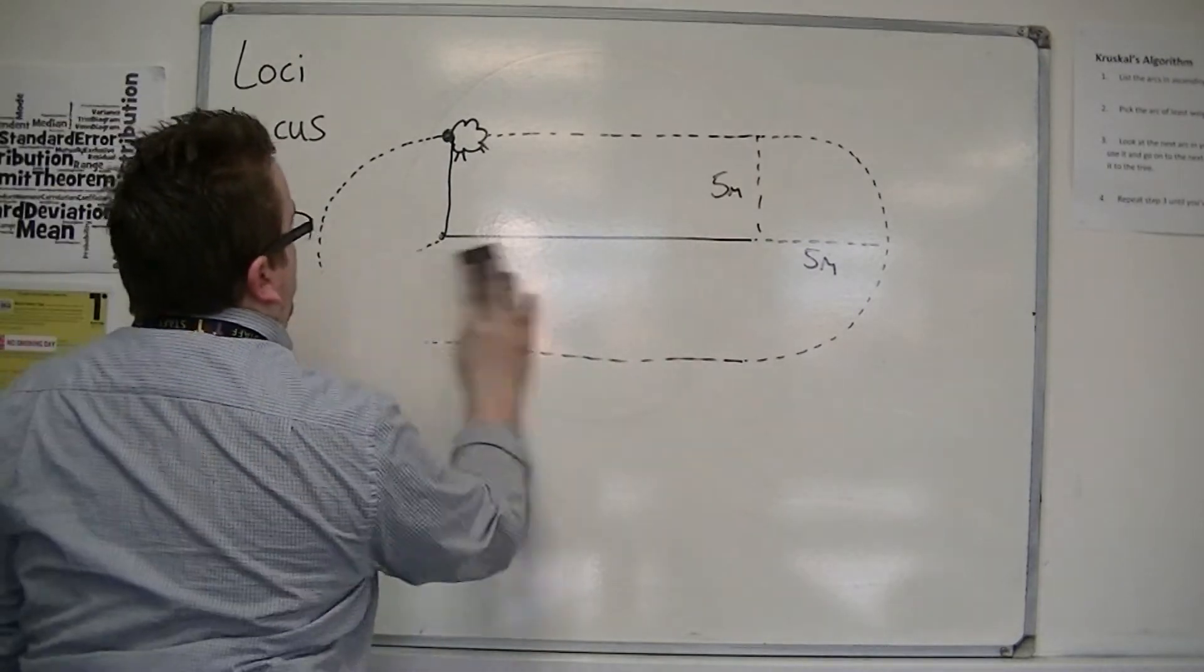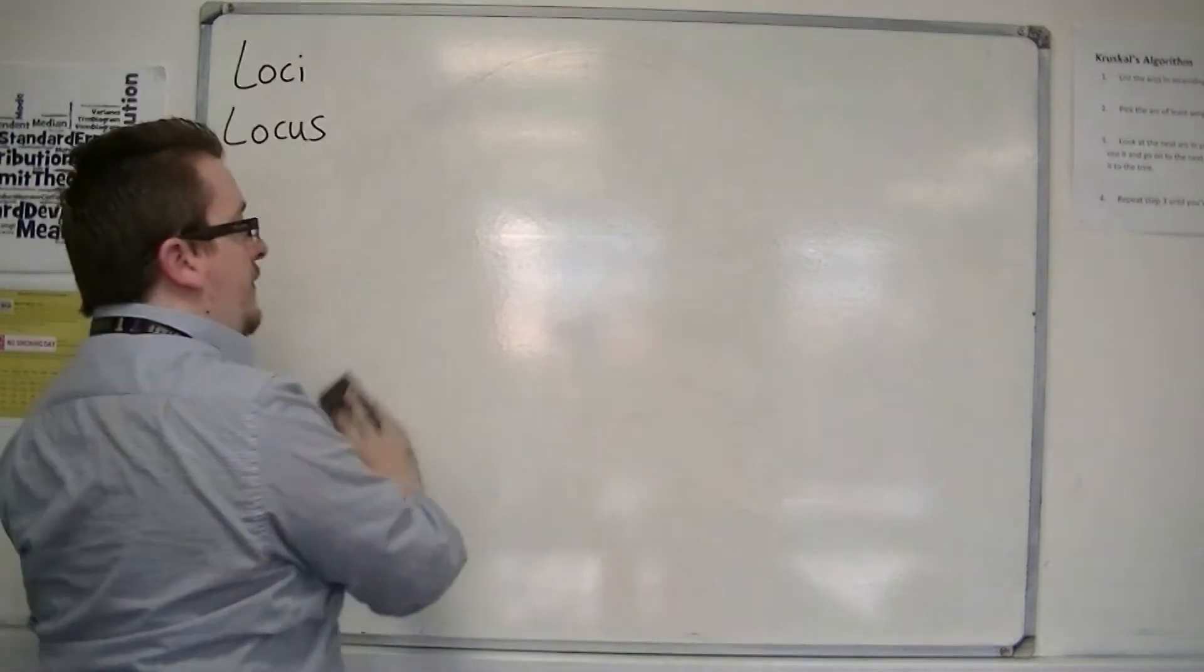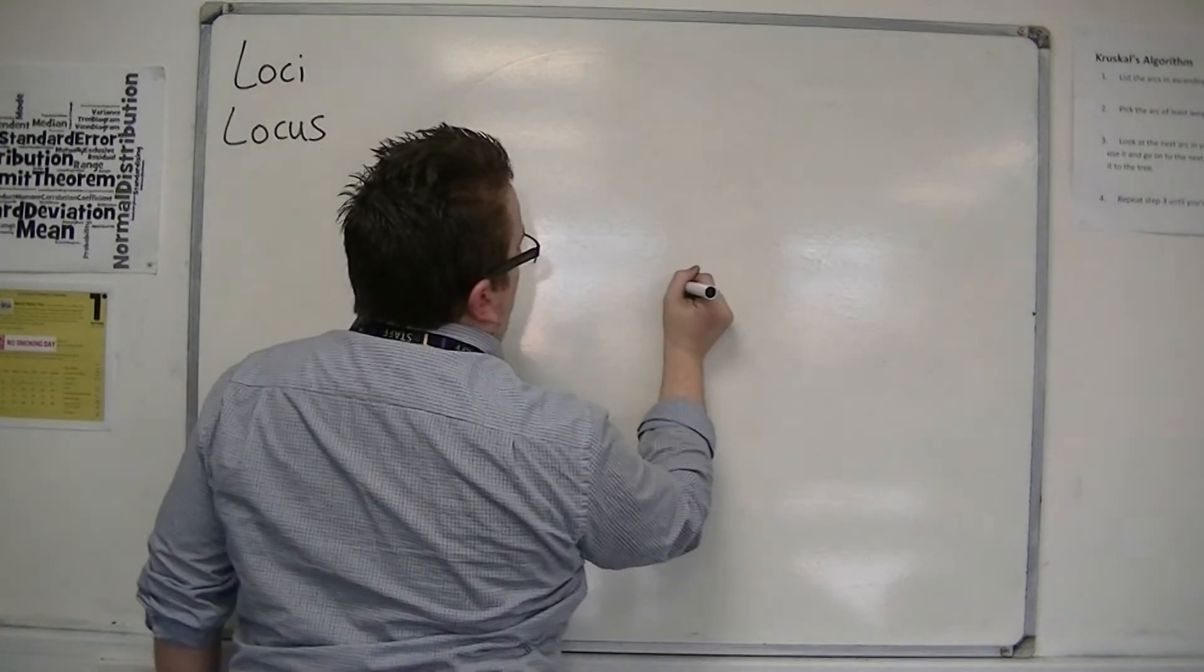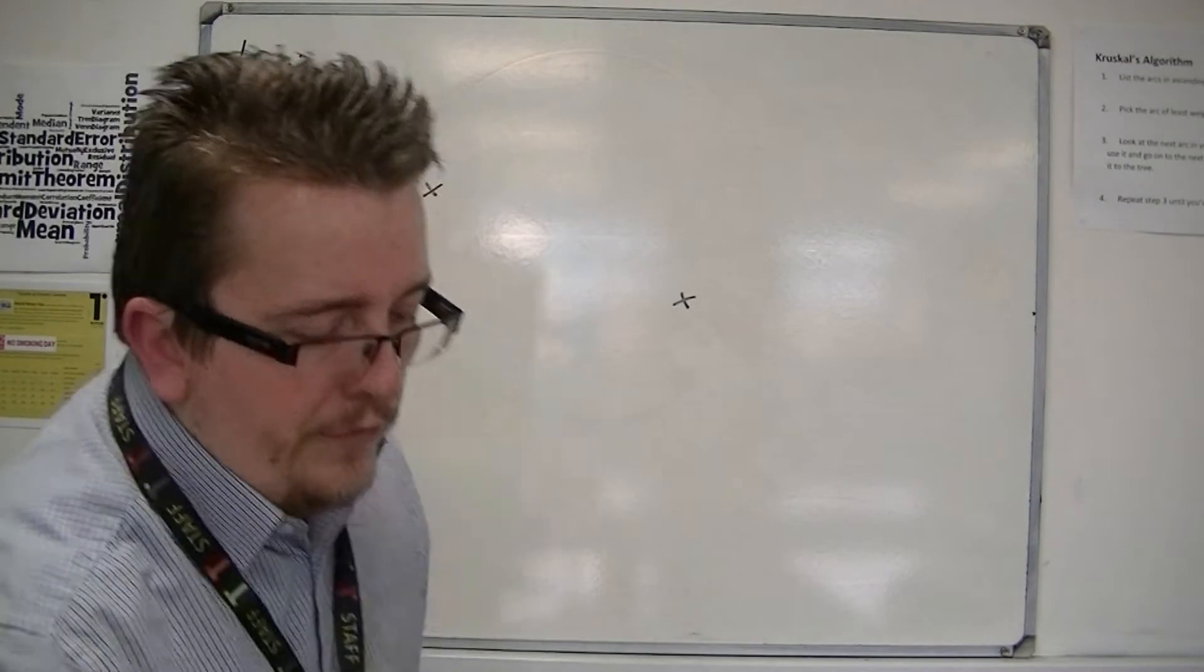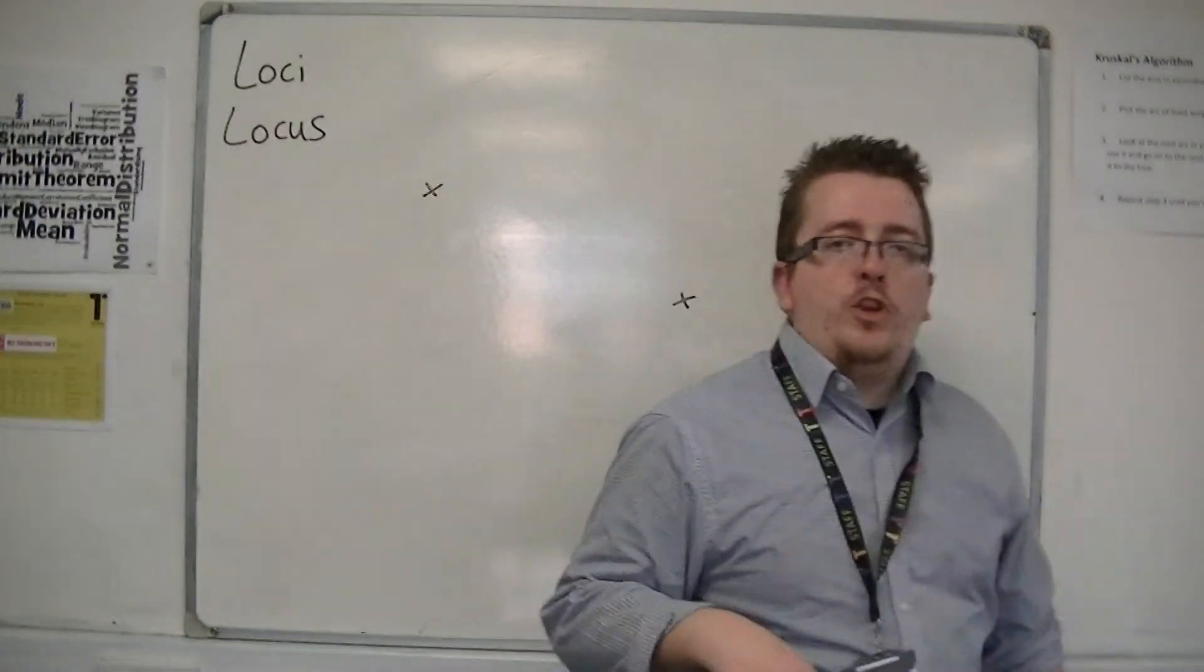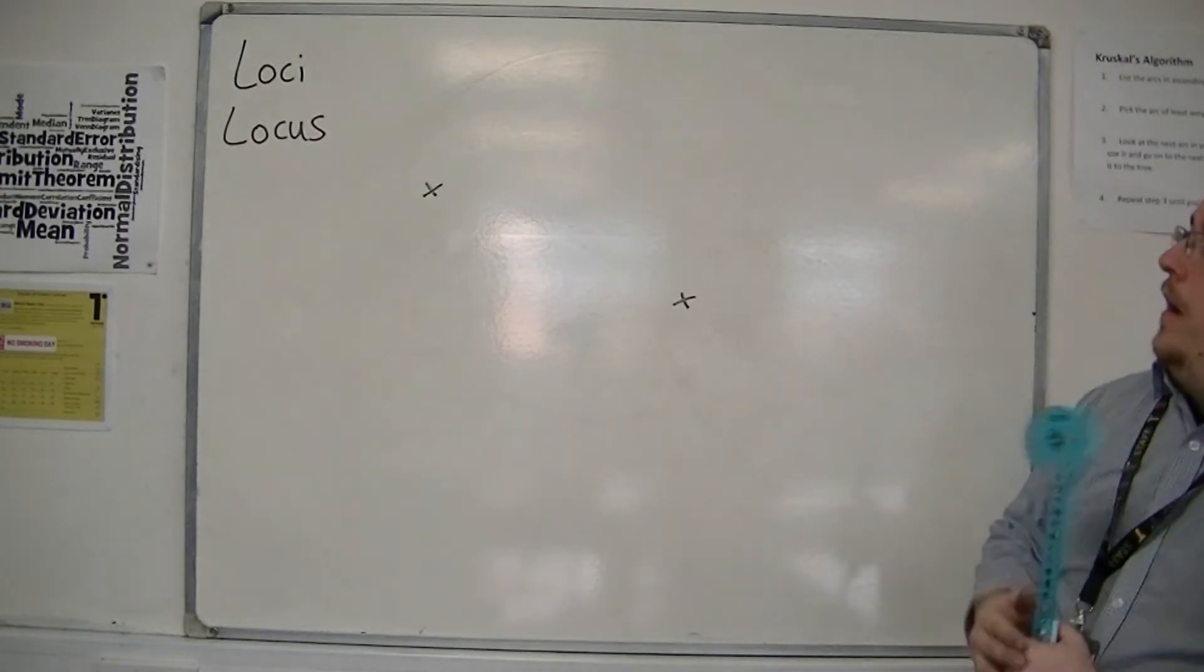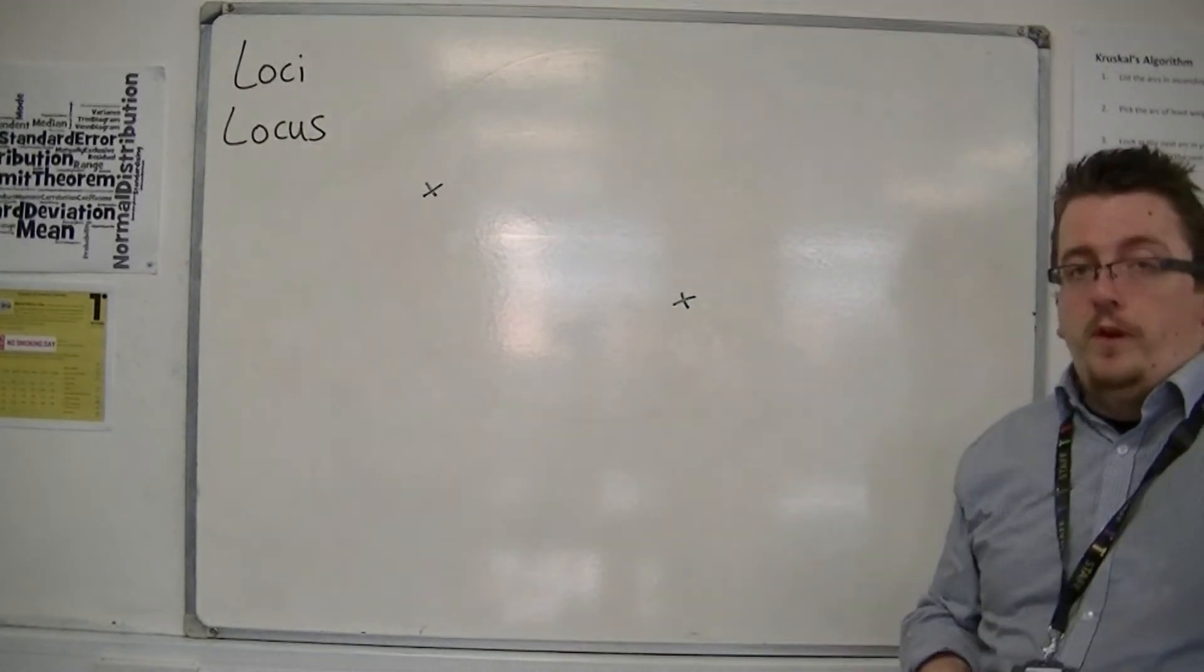Now the other type of locus that we consider at GCSE Maths is when we take two points, like so. And then I say, let's go back to the analogy of a big group, a class of 30 students. And then I say, I want you to stand equally distant from these two points.